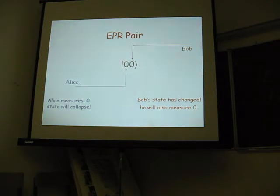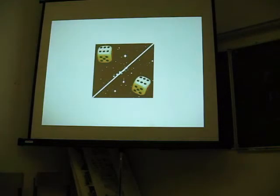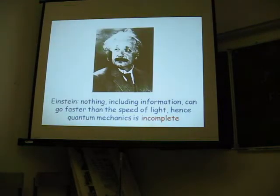And the reason that, well, this cannot be, because now information about Alice's measurement has sort of traveled immediately to Bob, and that cannot have been, so quantum mechanics has to say something more about the situation. This cannot happen. And for one, of course, similar. This is a picture, and nothing can go faster than the speed of light, hence quantum mechanics is incomplete.